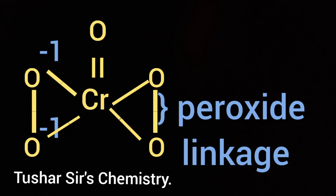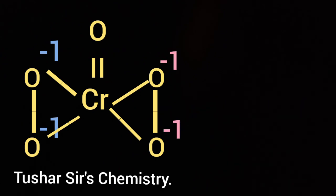The oxidation number of oxygen in peroxide linkage is minus 1. The oxygen connected to the chromium atom by a double bond has minus 2 oxidation state. Let us calculate the oxidation number of chromium in CrO5.